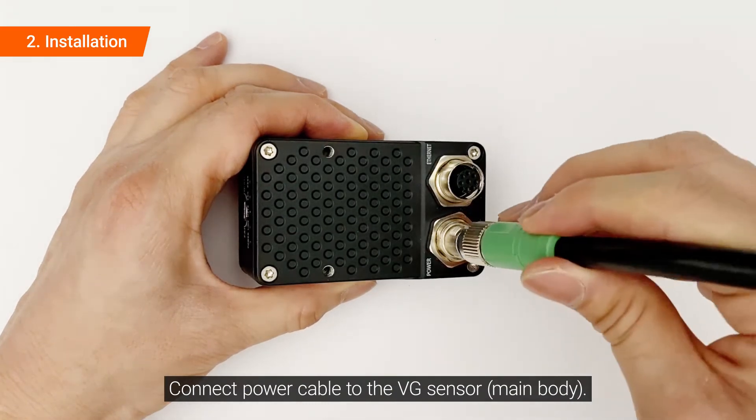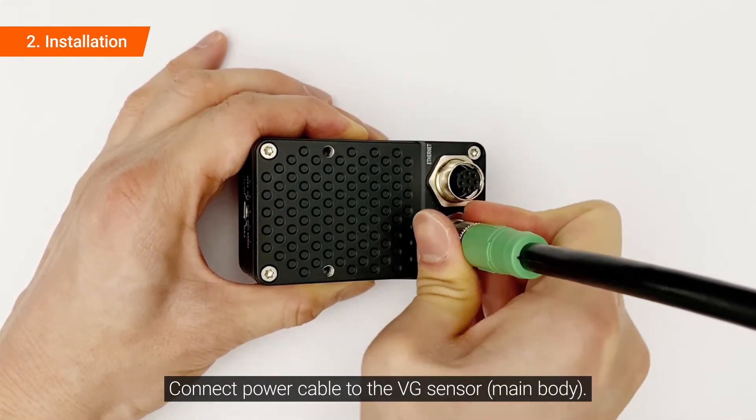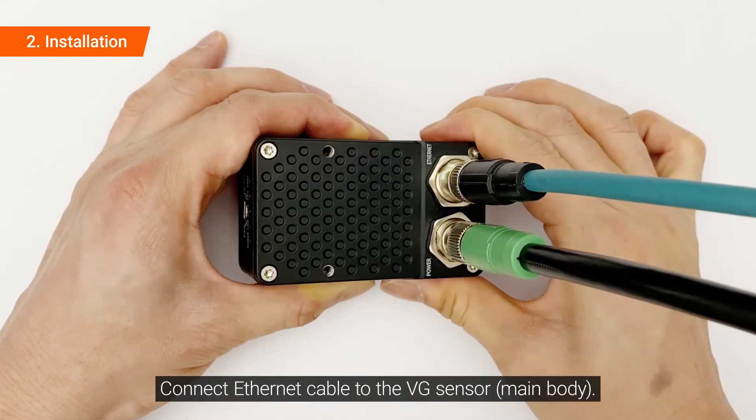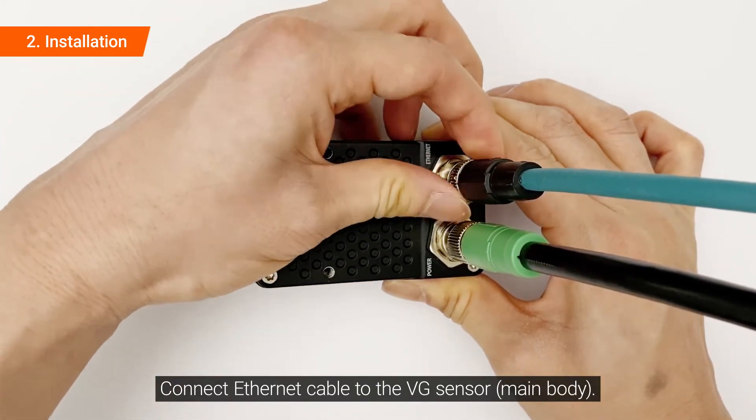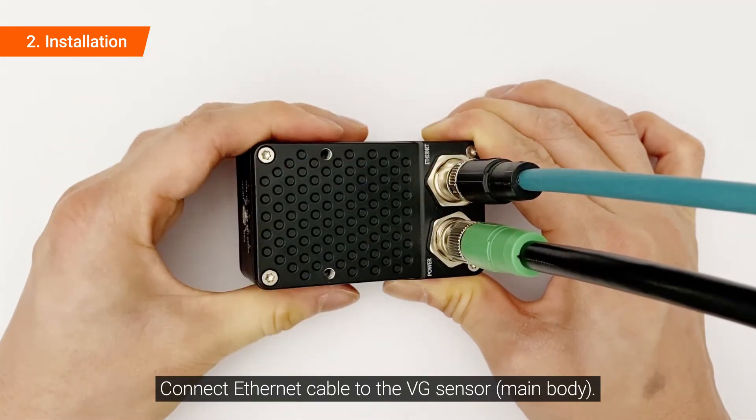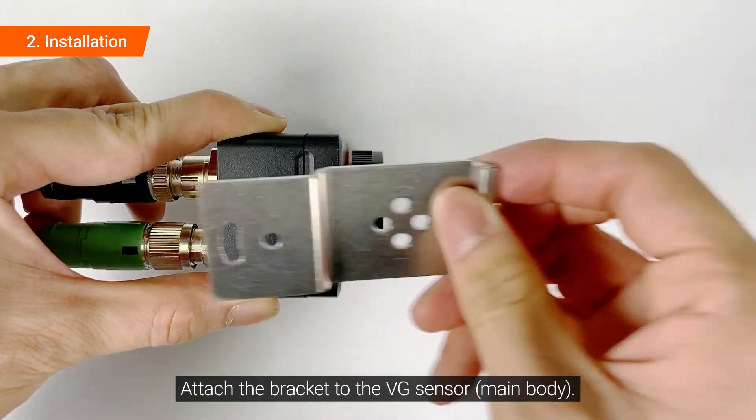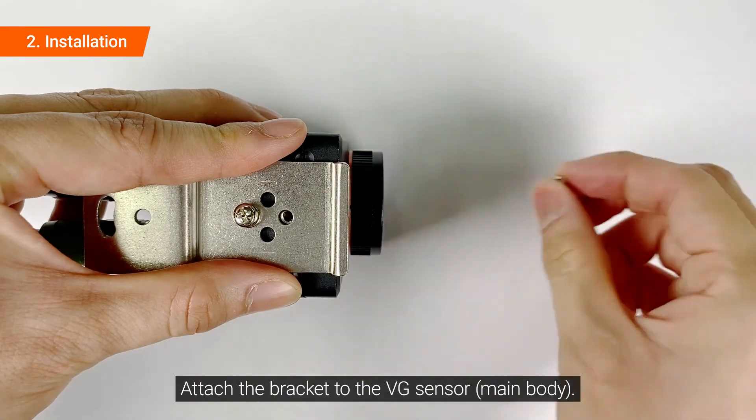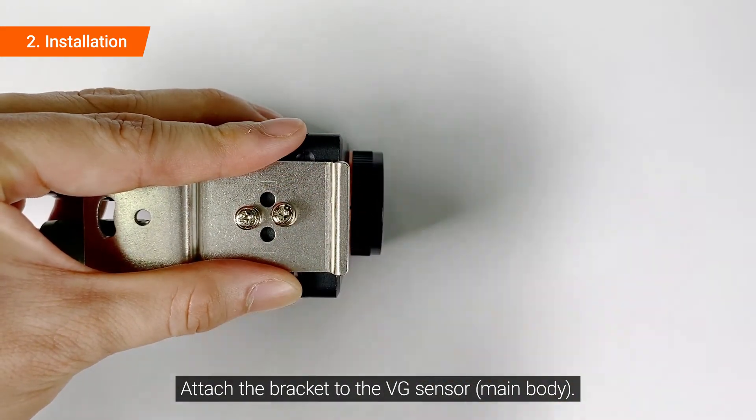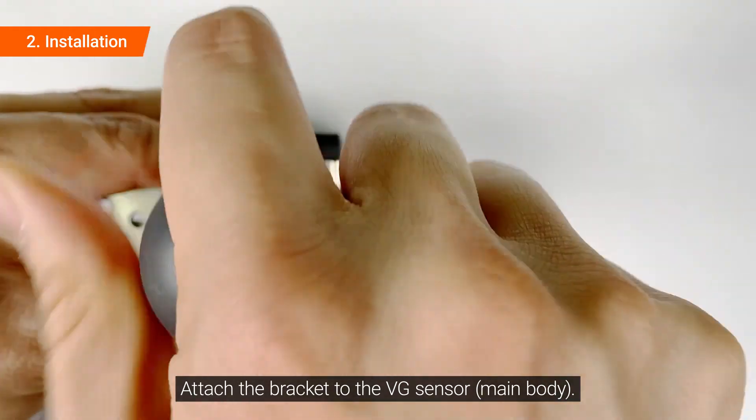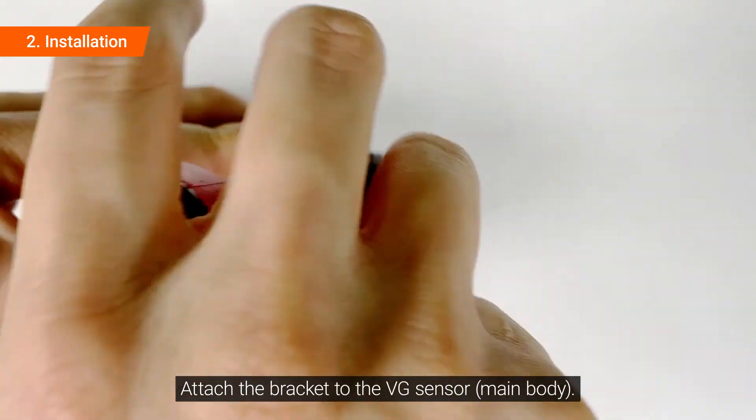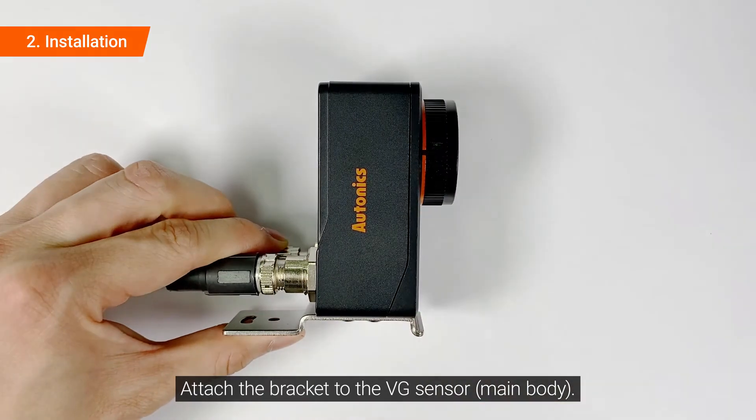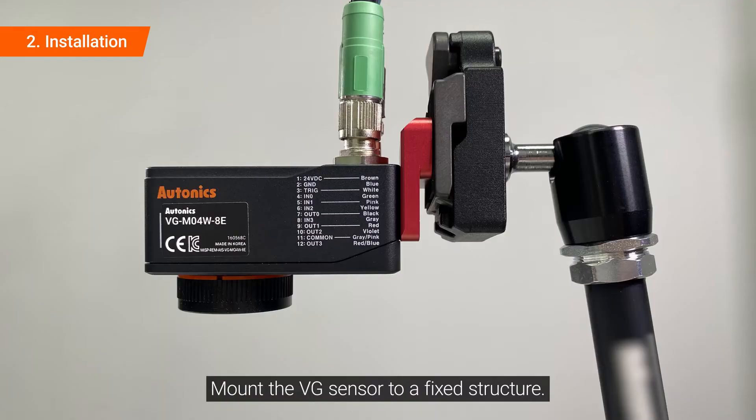Connect power cable to the VG sensor. Connect Ethernet cable to the VG sensor. Attach the bracket to the VG sensor. Mount the VG sensor to a fixed structure.